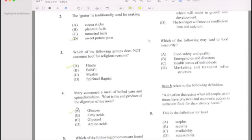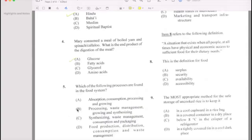Question number 5: Which of the following processes are found in food system? Answer is D.